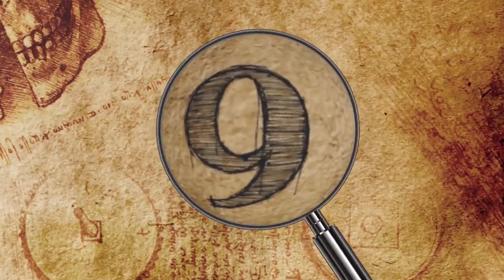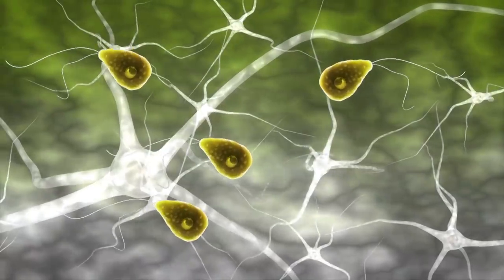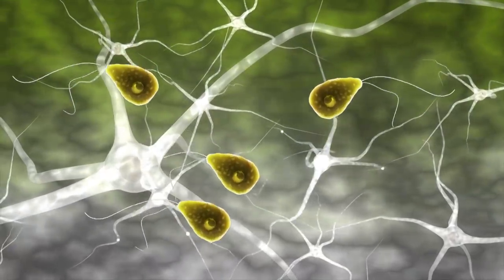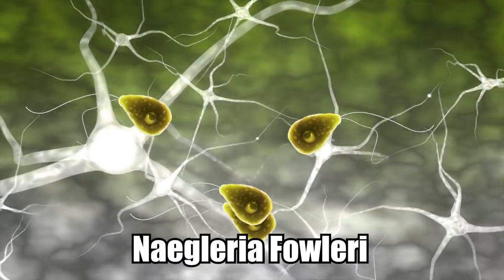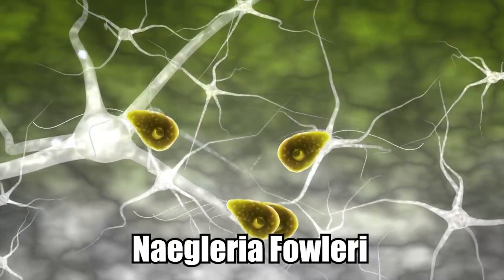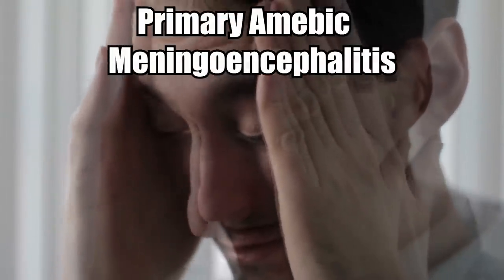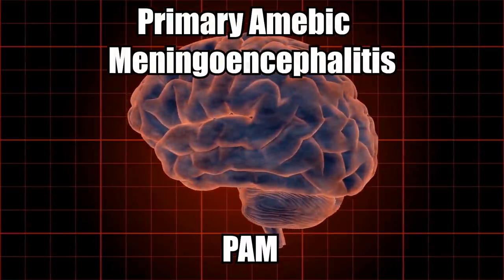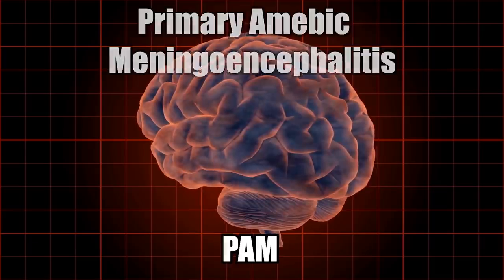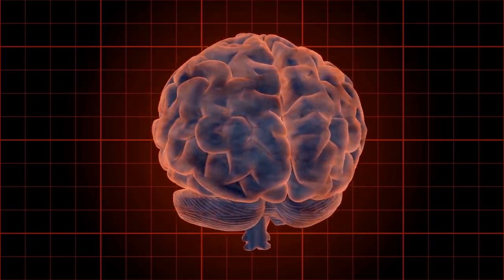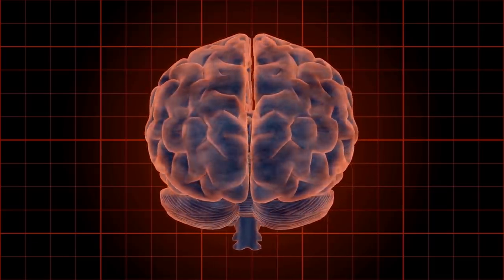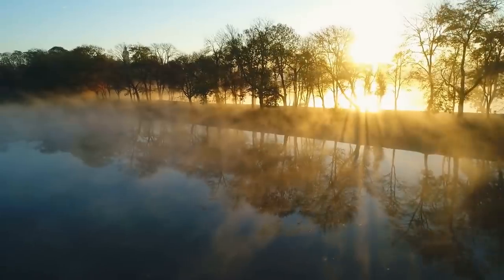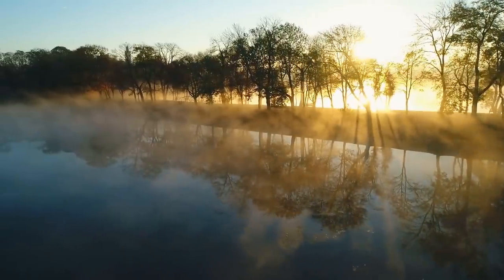Number 9: Brain-Eating Amoeba. Commonly known as the brain-eating amoeba, Naegleria fowleri is a single-celled organism that can cause a devastating condition in humans called primary amoebic meningoencephalitis, or PAM. This amoeba species has a particular fondness for human brain tissue, and often finds its way into humans via warm, stagnant freshwater bodies.